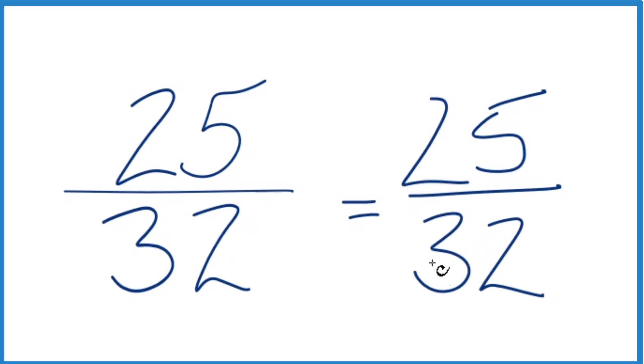What that means is that the fraction 25 over 32, it's already simplified. Already in lowest terms, we can't reduce it any further. The greatest common factor, that was 1. So that's it.